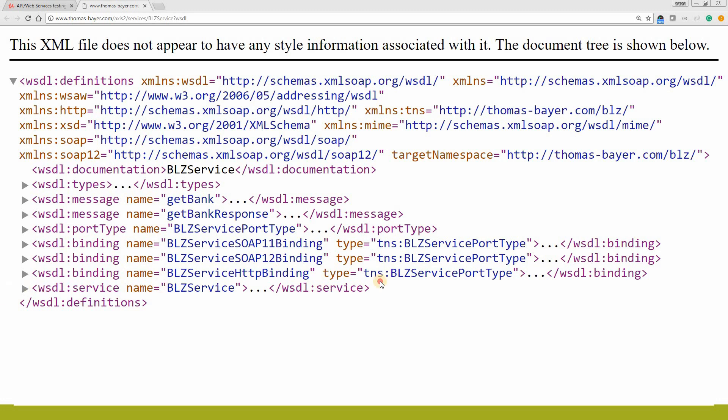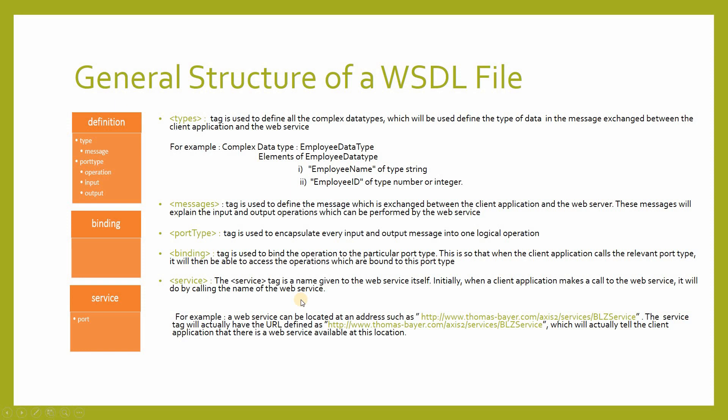Now let's talk about the last tag — the service tag. The service tag is a name given to the web service itself. When a client application makes a call to the web service, it does so by calling the name of the web service. The service tag will have the URL defined, which tells the client application that there is a web service available at that location. The service tag gives detailed information about the endpoint where operations should be called — for example, a production server, a development server, or a QA server. The information about which server to connect to will be defined in this service tag.